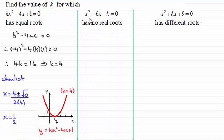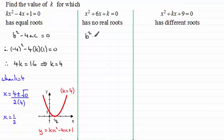In the next question we've got the quadratic equation x squared plus 6x plus k equals 0, and we've got to find the value of k for which it has no real roots. So the discriminant, b squared minus 4ac, has got to be negative — in other words less than 0.